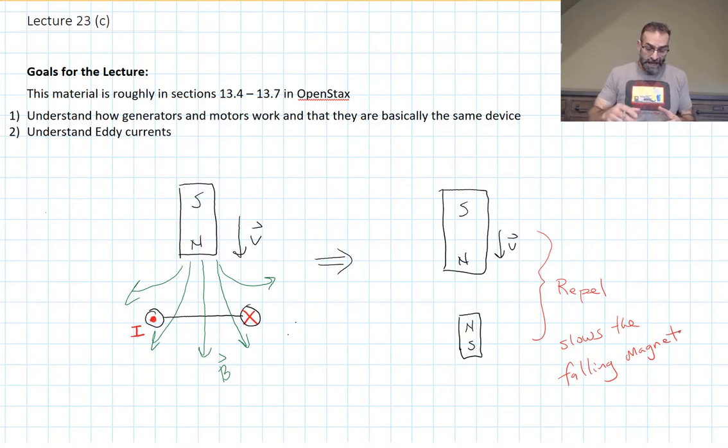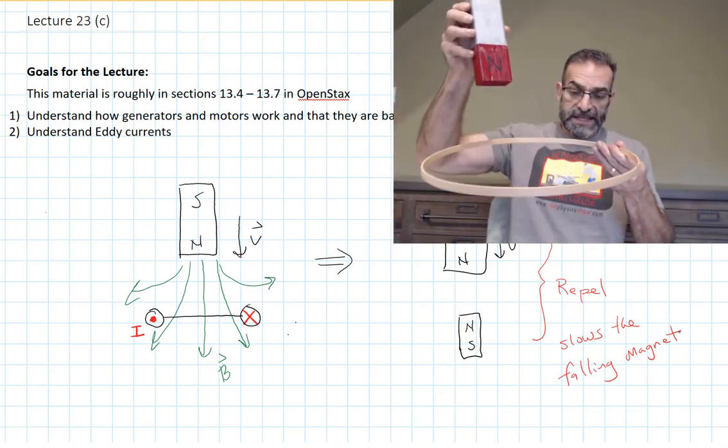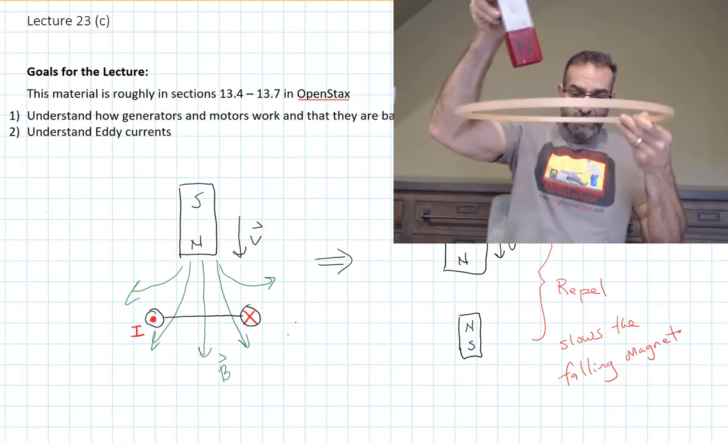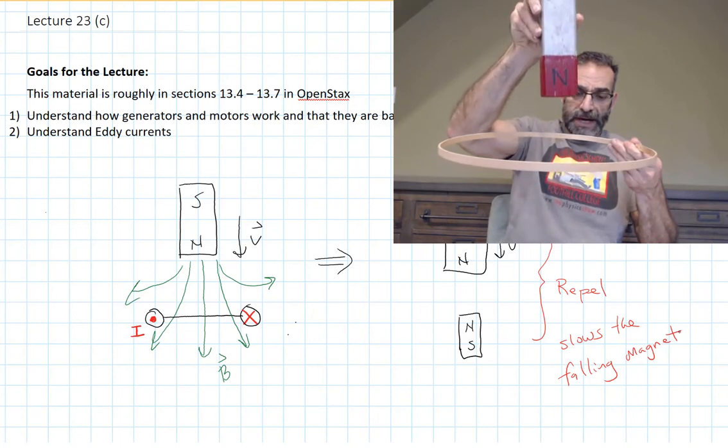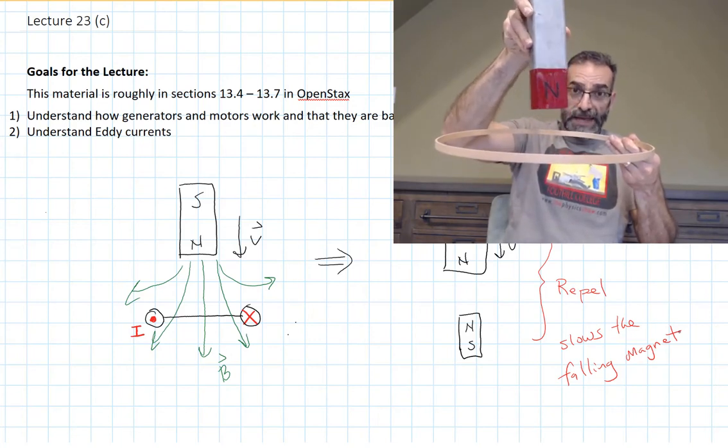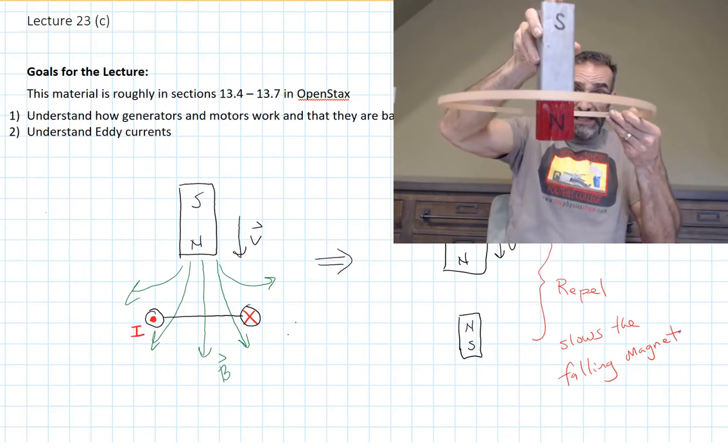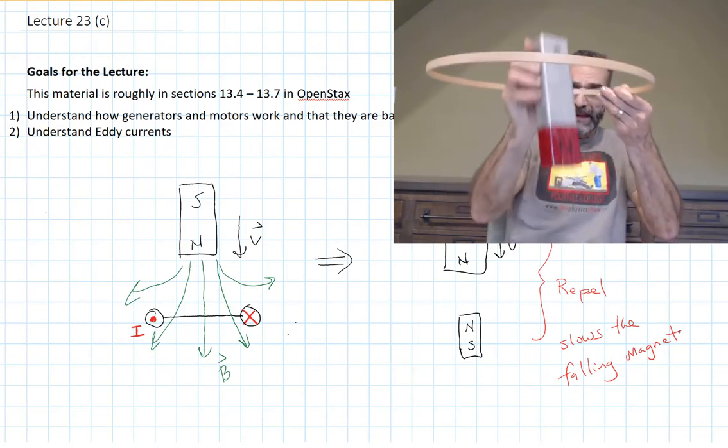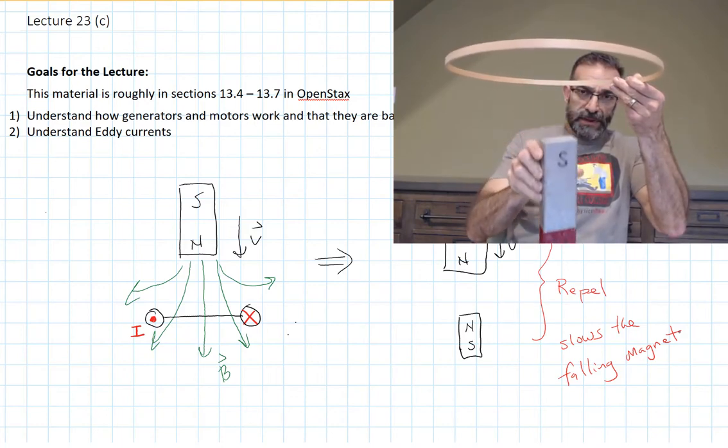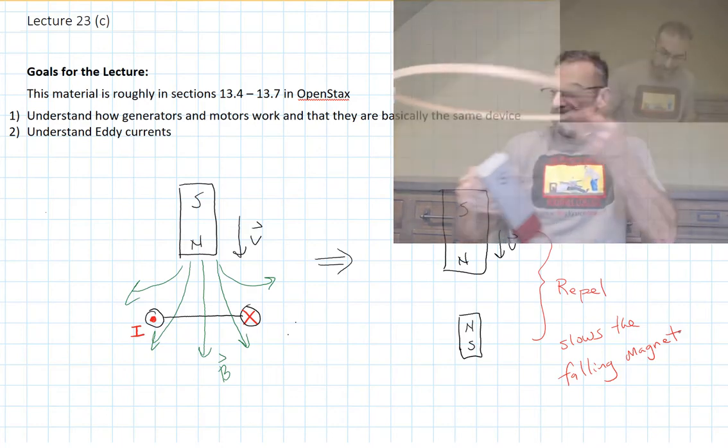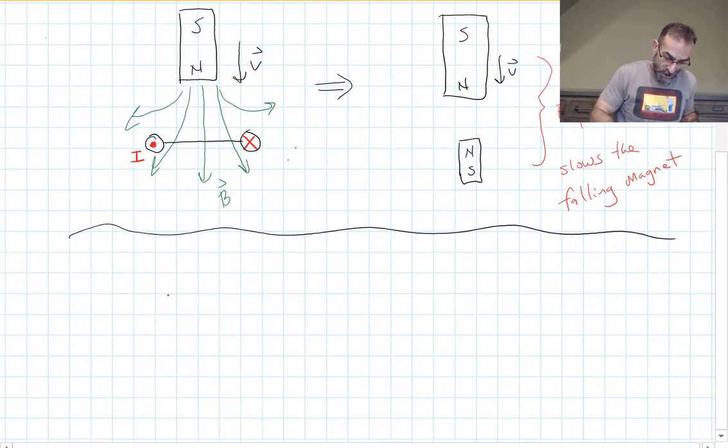Now let's allow our magnet to continue to fall. So we had this situation, right? We had a magnet, we had a loop of wire, and the magnet was coming down toward the loop of wire, and we saw what happened. Now we're going to allow that magnet to pass completely through the loop of wire and continue to fall down below the loop of wire like this. So now our loop of wire is above the falling magnet.